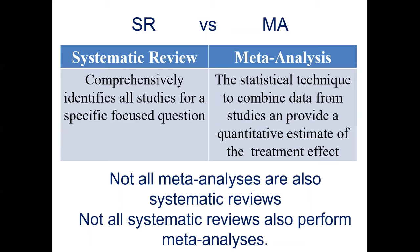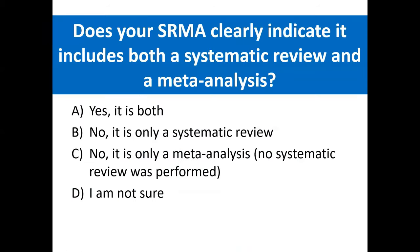Recall that a systematic review and meta-analysis are actually two separate things. Generally, one is the identification of studies and one is a statistical technique. A study may not perform both, so it is important to take a look at your SRMA to see what was actually done. Please assess whether your SRMA includes both: answer A if it is both, B if it is only a systematic review, C if it is only a meta-analysis without a systematic review, and D if you are not sure. If you answered B or D, you likely will not be able to perform the GRADE assessment in part 3.